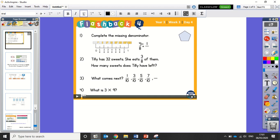I'm going to start off straight away with our Flashback 4. Question 1, complete the missing denominator. 4 eighths is equal to 1 over something. If we look at this number line here, we can see that 4 eighths is halfway between 0 and 1. So the equivalent fraction for that is 4 eighths is equal to 1 half.